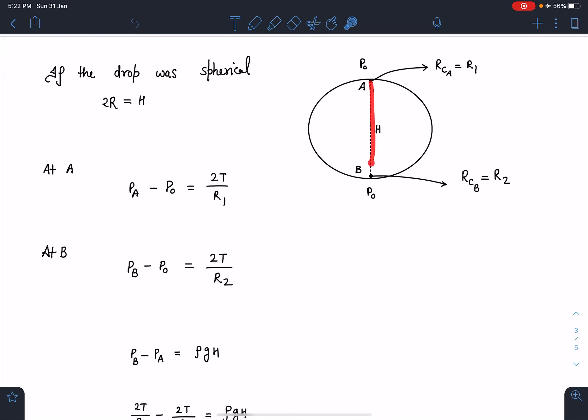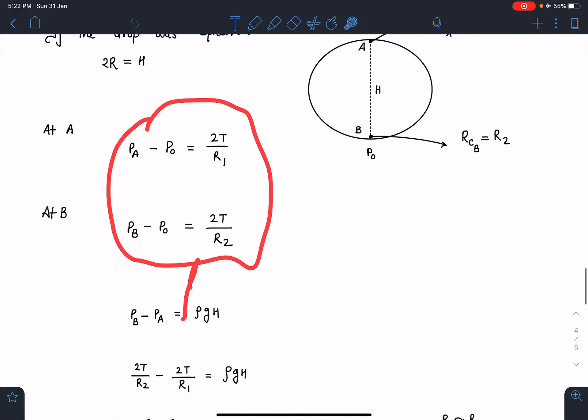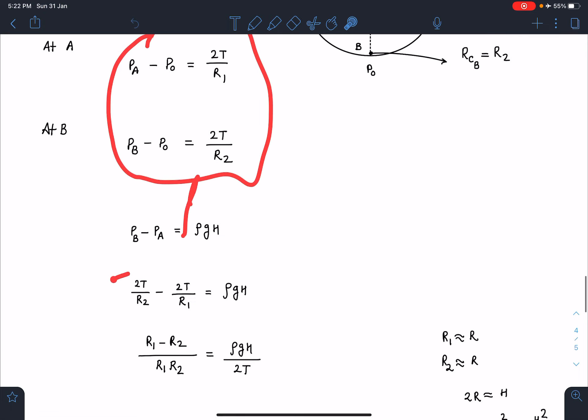P_A minus P_B, we are going to get ρgh. From here we can substitute: 2T/R2 minus 2T/R1 equals ρgh.